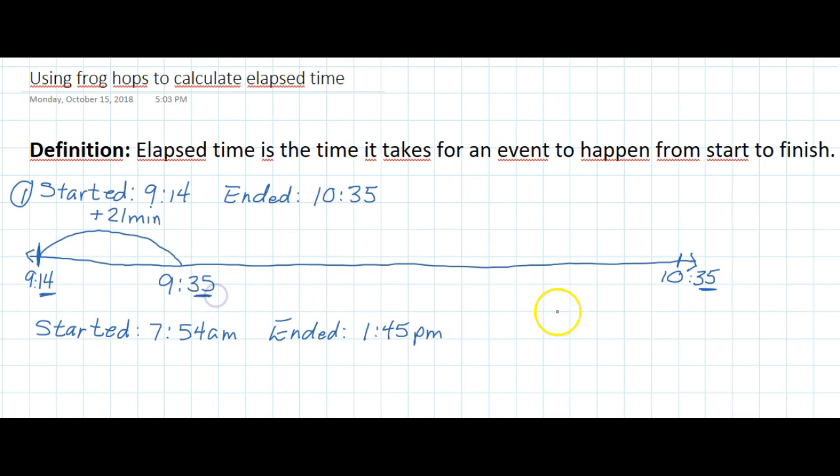Now you can see that the minutes are the same. So now all I need to do is work on the hours. Well, I just have to go from 9 hours here, or 9 o'clock to 10 o'clock. So it's one hour. So I have one big hop here of plus one hour. All right, so I've done all my hops.